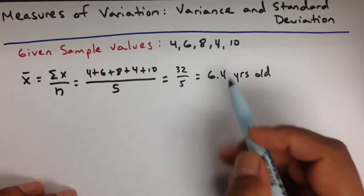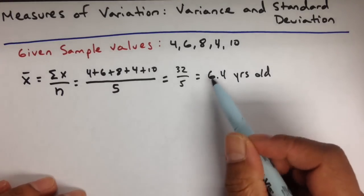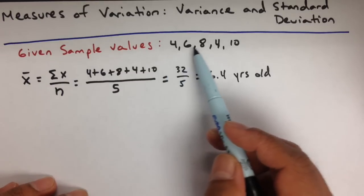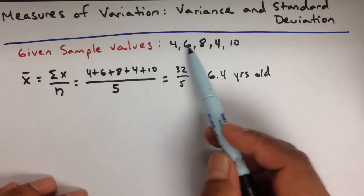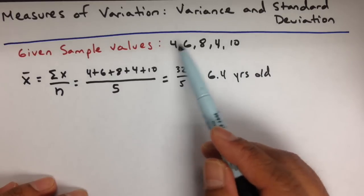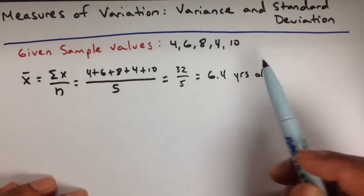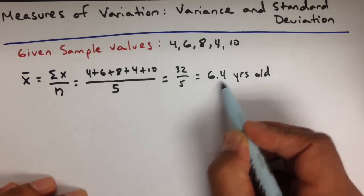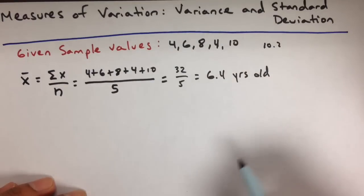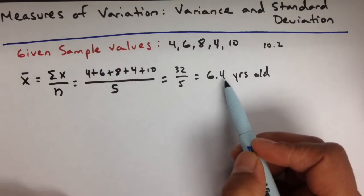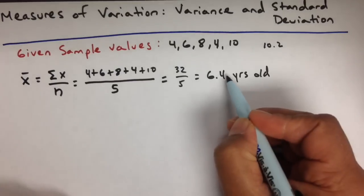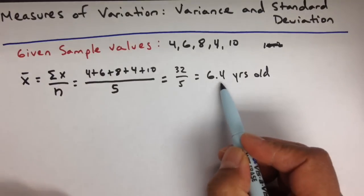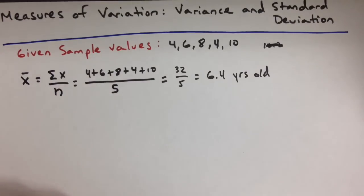Using your calculator, this gives you 32 divided by 5, which gives us 6.4 years old — or 6.4 points per game if you're thinking in basketball terms. For the rounding rule, we can only have one additional decimal place in our answer compared to our data. Our data is all whole numbers, so 6.4 is our one additional decimal place allowed.